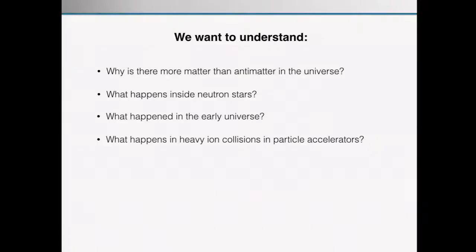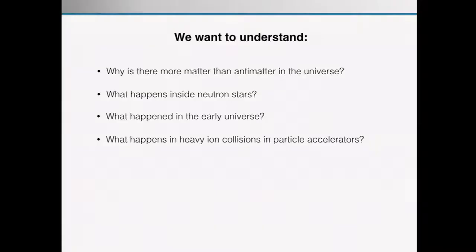This entails questions such as: Why is there more matter than antimatter in the universe — why are we here? Or what happens inside neutron stars? Or what happened in the very early universe? Or what happens in heavy ion collisions and particle accelerators? To find answers to these types of questions, we need new methods for gauge theories.